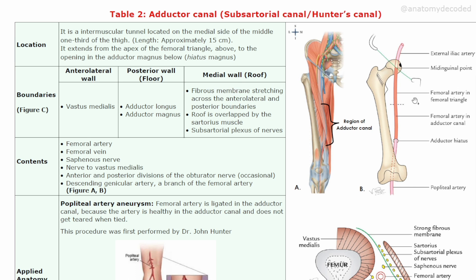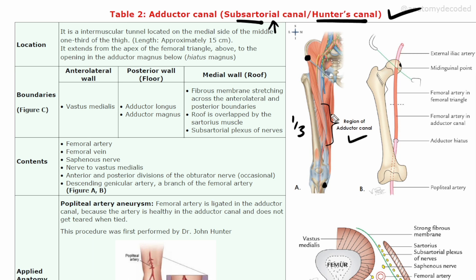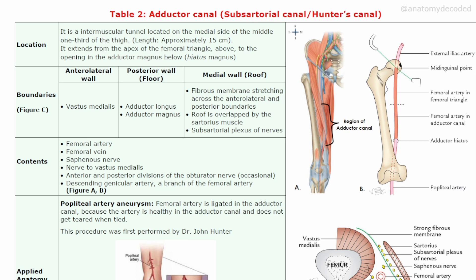Now let's cover the adductor canal. It is also referred to as the subsartorial canal or Hunter's canal. It is called subsartorial because it is present beneath the sartorius muscle. The sartorius arises from the anterior superior iliac spine and goes towards the upper medial aspect of the tibia. Deep to the middle part of the sartorius, in the middle one third of the thigh, there is a tunnel-like space called the adductor canal. It was first described by Dr. John Hunter.